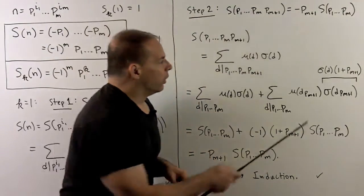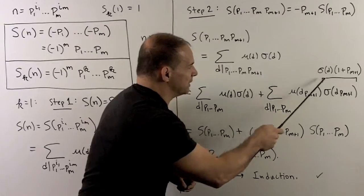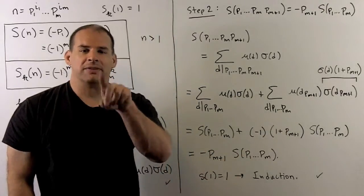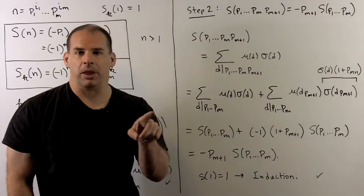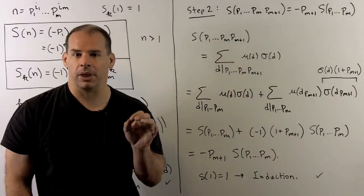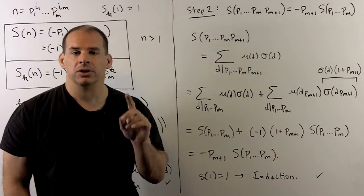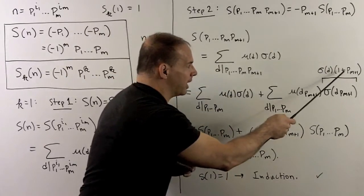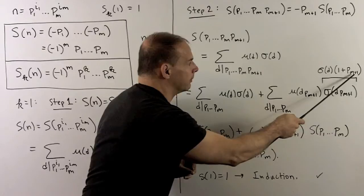We'll have those, the sum of the divisors of d, so that'll get a 1. Then we'll have the sum of the divisors of d times pn plus 1, so we just put in a pn plus 1 factor. So with that, we can factor out a sigma d, leaving me with a factor of 1 plus pn plus 1.